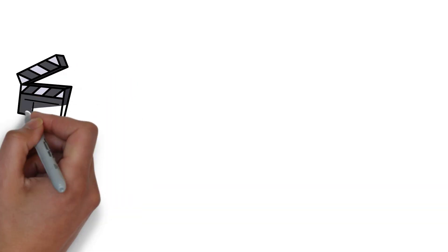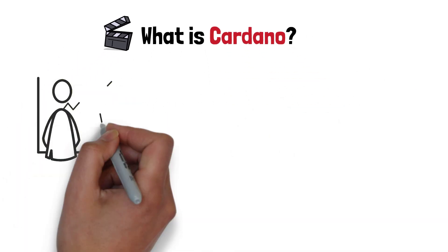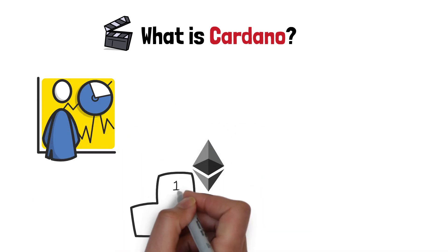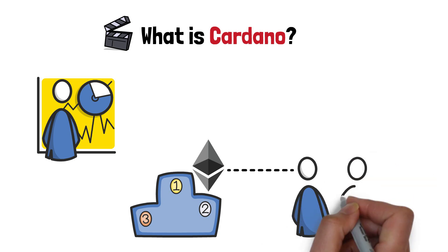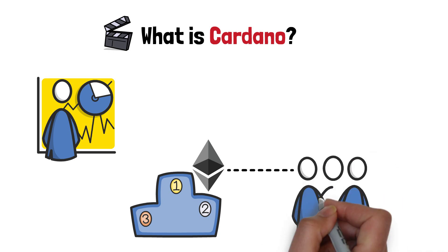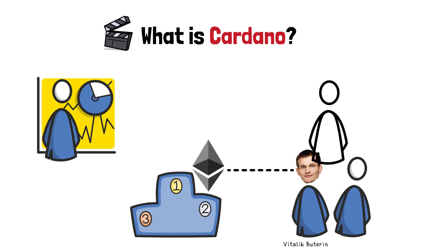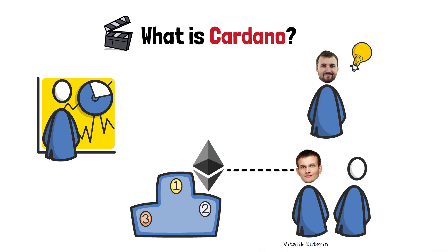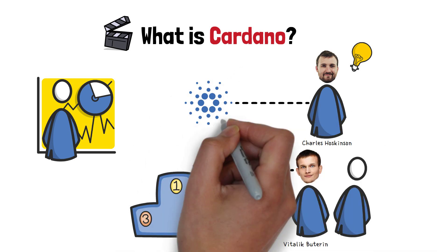In this video, I will tell you all about what is Cardano. If you spent even a day in the crypto markets, you've probably heard about Ethereum, the second-largest cryptocurrency. Ethereum was created by a team of inspired individuals, among which the most well-known one is Vitalik Buterin. At some point, the initial Ethereum team broke up, and some members went on to create their own projects. One of those members was Charles Hoskinson, the now-known creator of Cardano.